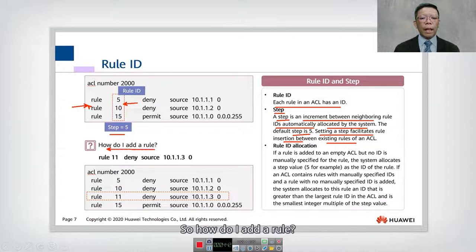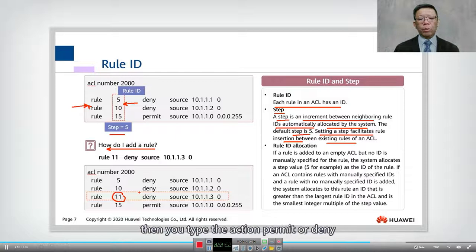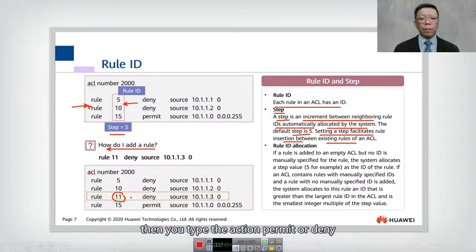So how do I add a rules? So as you can see that I add a rules number 11 here. You just type in. It's very simple. So you just type rules 11. Then you type the action, permit or deny, followed by the source.